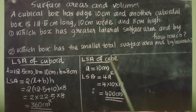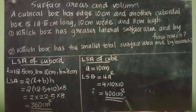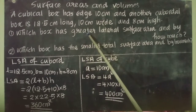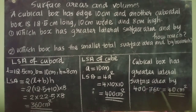LSA of cube: A = 10 cm. LSA = 4A² = 4 × 10 × 10 = 400 cm². The cuboidal box has 360 cm² lateral surface area and the cubical box has 400 cm² lateral surface area. The cubical box has greater lateral surface area by 400 − 360 = 40 cm².